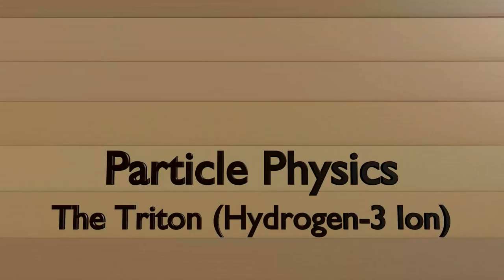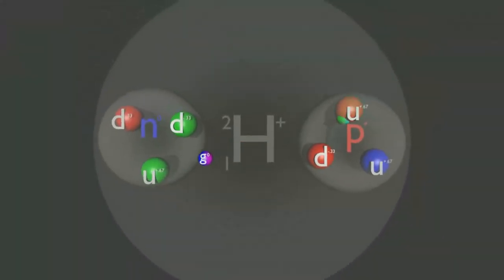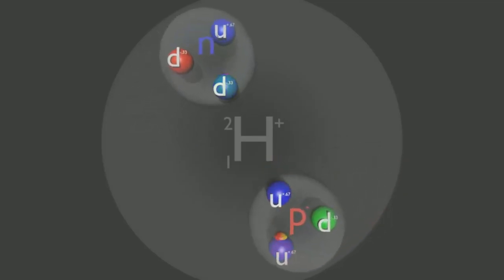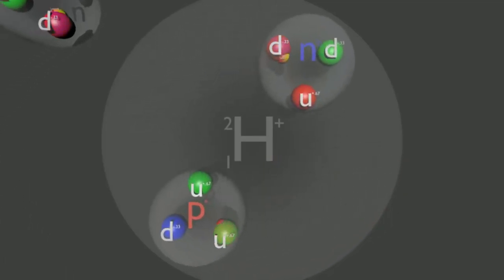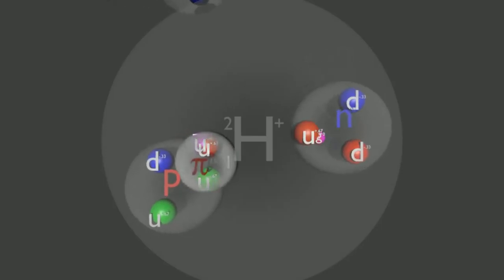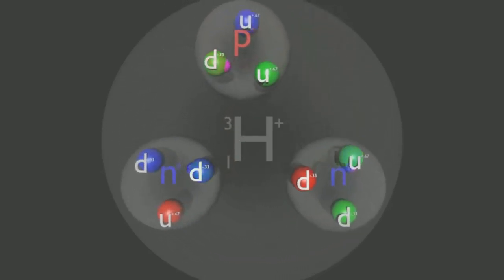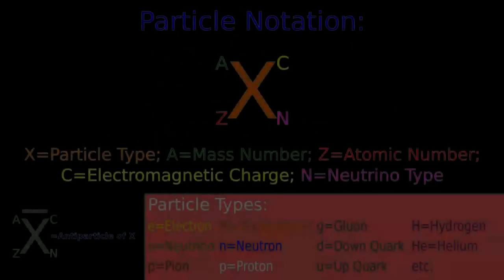So, the last video ended with the stable configuration of the deuteron. Now, suppose a free neutron were to come close to one of these deuterons. Naturally, since it doesn't have an electric charge, it would be very easy for the nuclear force to cause it to bind the deuteron. This is what happens, and we get a triton.